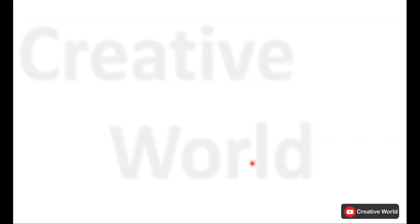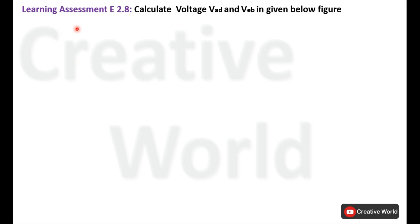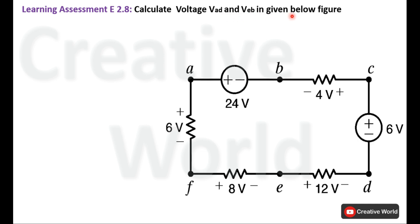Now move towards the problem — Learning Assessment E2.8. Calculate voltage VAD and VEB in the given figure. This is the circuit diagram. The only information given in this circuit related to all elements is in the form of voltage — both supplied and dropped voltages are given. No other parameter is given, so we can use Kirchhoff's Voltage Law for the solution.